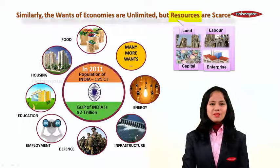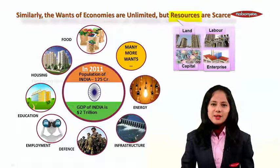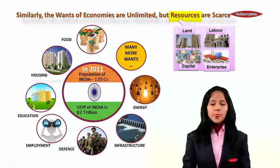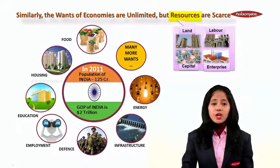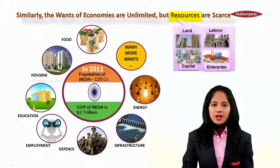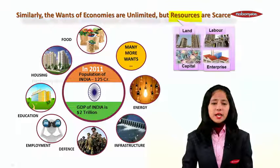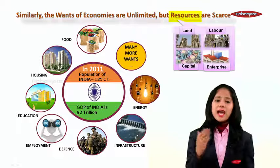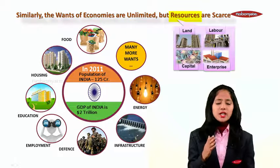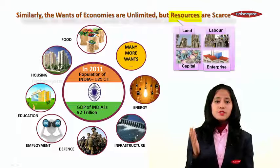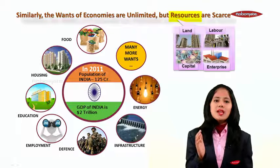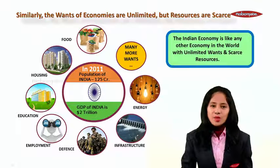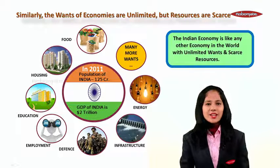In 2011, India's population was 125 crore, but its GDP — gross domestic product, or national income — was 2 trillion US dollars. The Indian government at that time faced a dilemma of meeting the unlimited wants of its citizens with the limited budget and resources it had. So the Indian economy is like any other economy in the world, with unlimited wants and scarce resources.